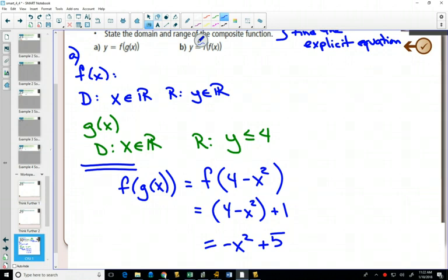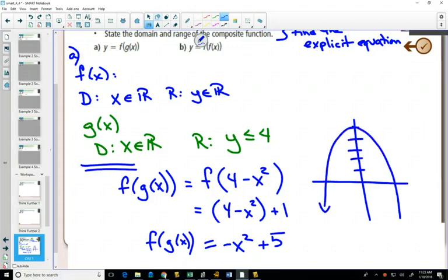Can you graph that? Because that's what f of g of x is equal to. We're supposed to graph that and state its domain. Can you use your transformations to graph that? Yes. It's a parabola that has been moved up 5 and reflected down so it looks like that.